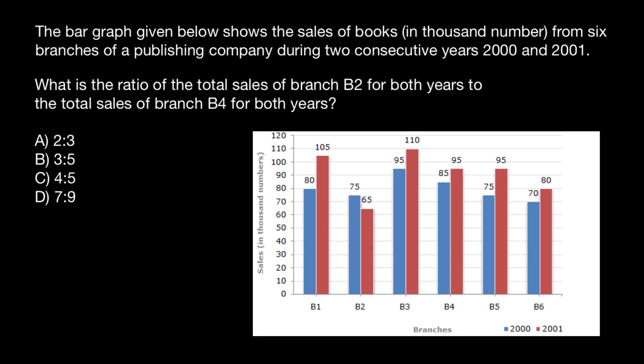Hello and welcome to Nikolai's genetics lessons. In this video I'm going to show you how to solve ratio problems. Here's a problem: the bar graph given below shows the sales of books in thousands from six branches of a publishing company during two consecutive years, 2000 and 2001.